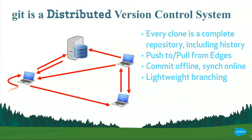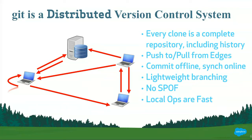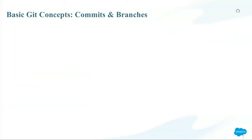We also have very lightweight branching in Git. If you have a master branch and you want to create another branch, it's a lightweight operation — not very compute intensive. You're not making a copy of your whole repository. And because we have this network, there is no single point of failure. Local operations are super fast.